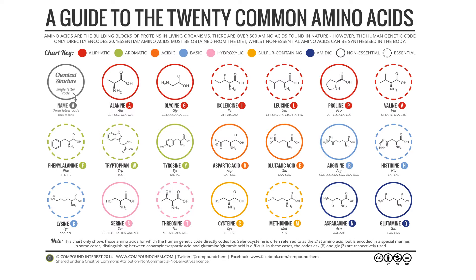These are the 20 common amino acids that we consider very important. They are alanine, glycine, isoleucine, leucine, proline, valine, histidine, glutamine, and others. These are the important 20 amino acids.